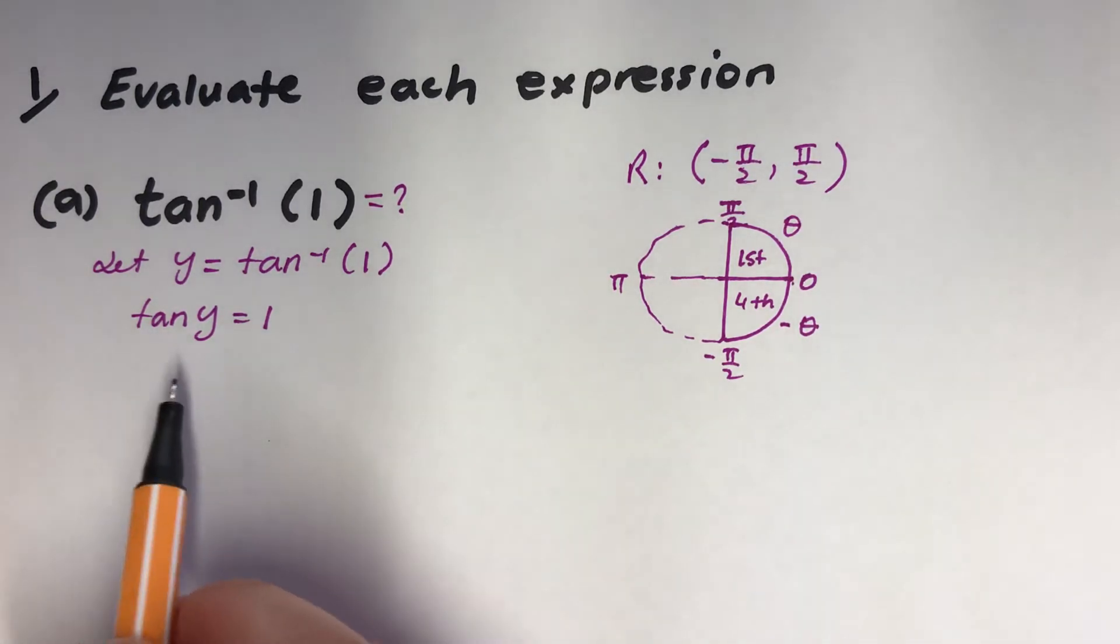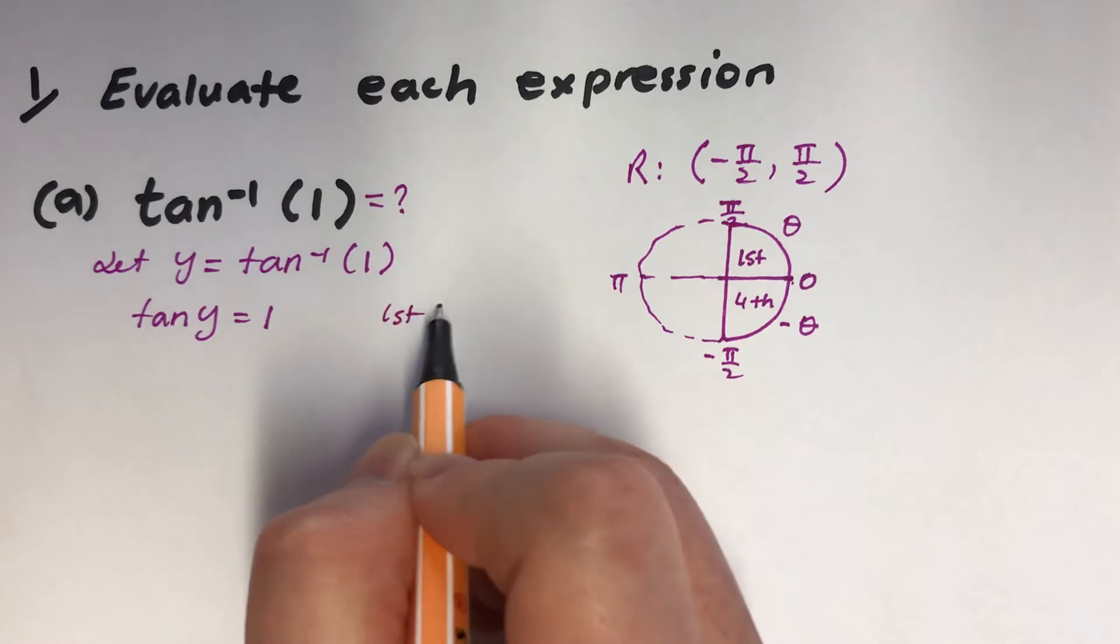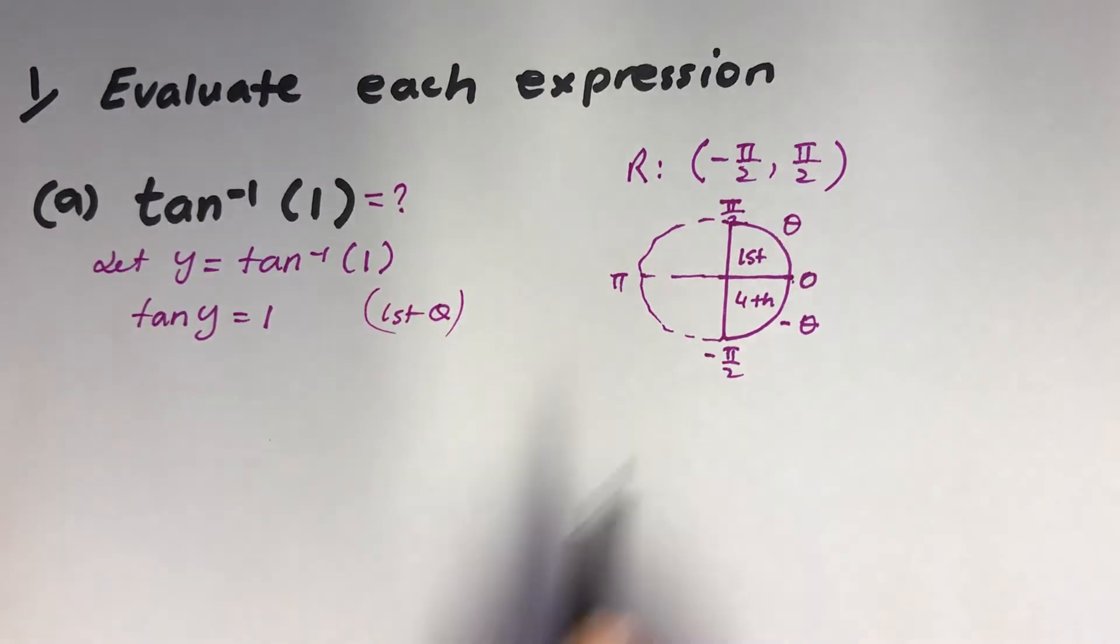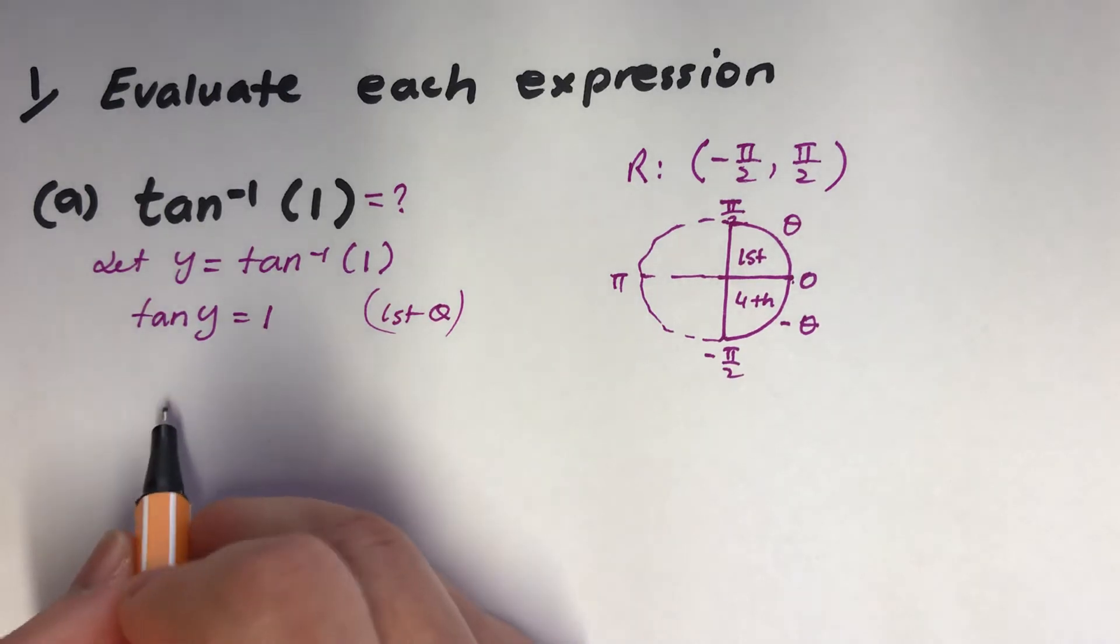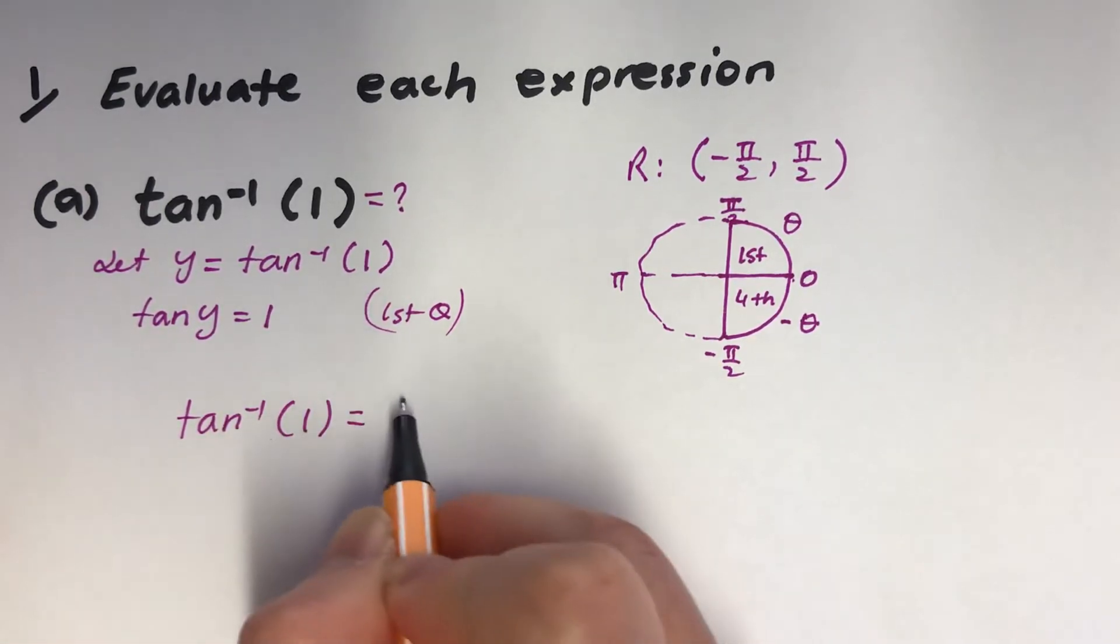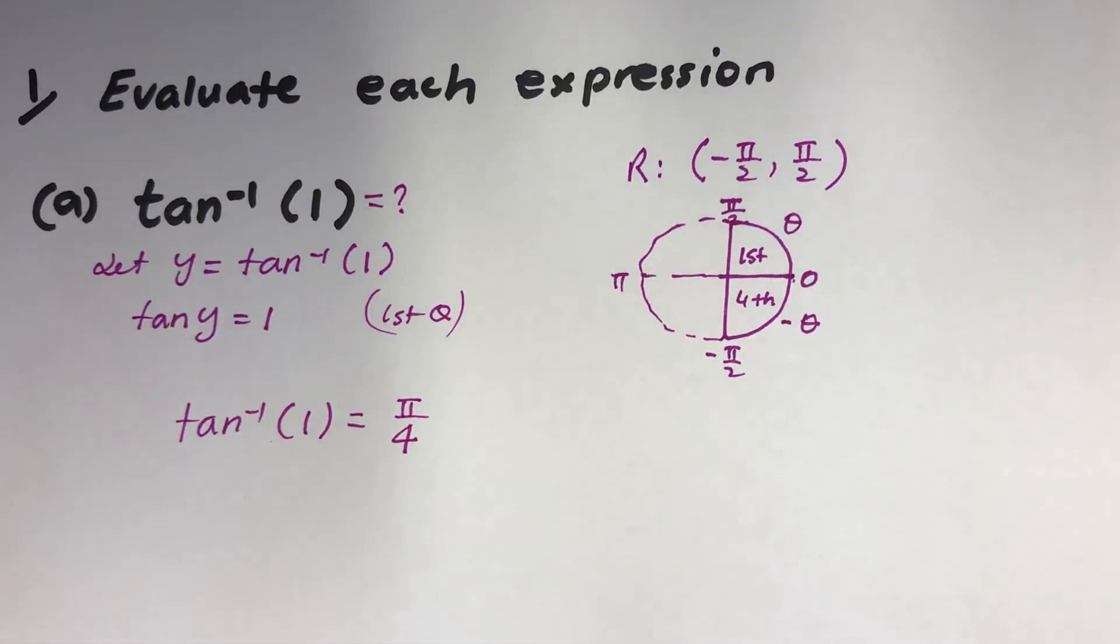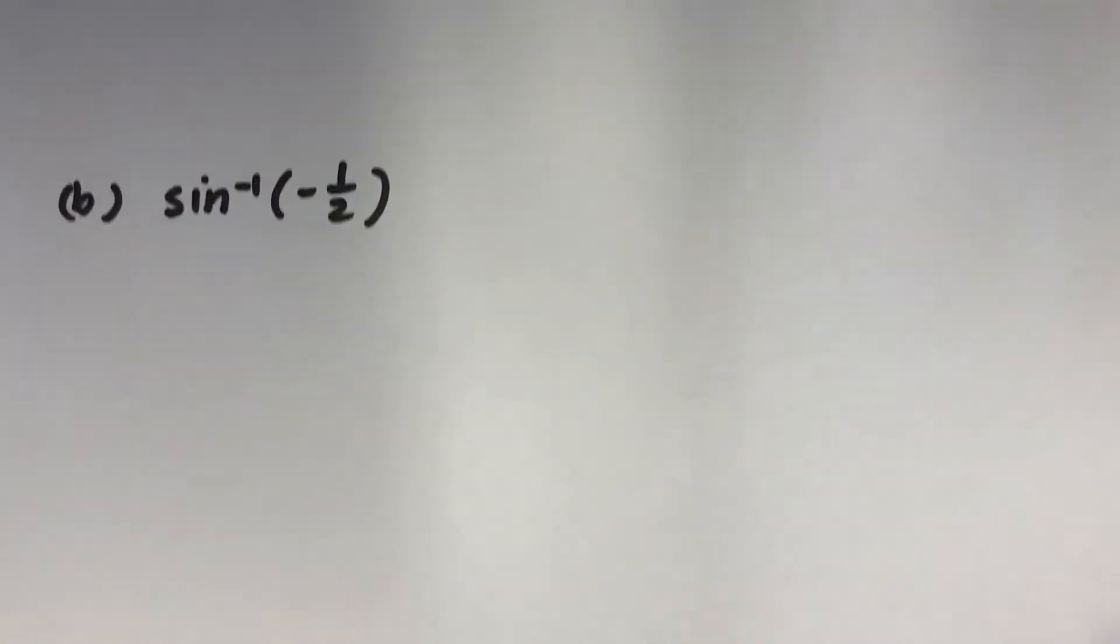So it's only going to be positive acute angle or negative acute angle. Which quadrant will have positive tan? Obviously, it's the first quadrant. So my answer to this is pi over 4. That's the exact value. Next one.